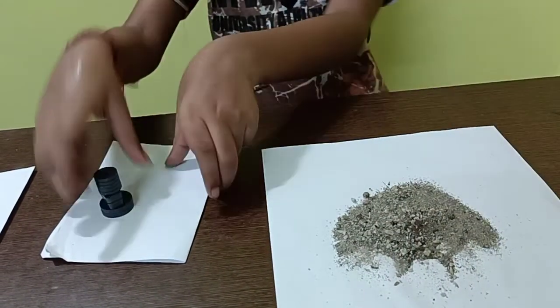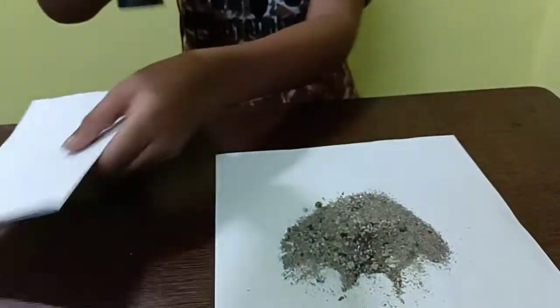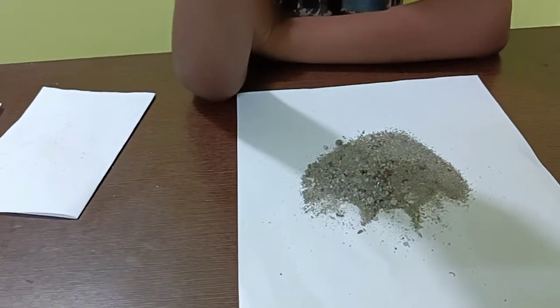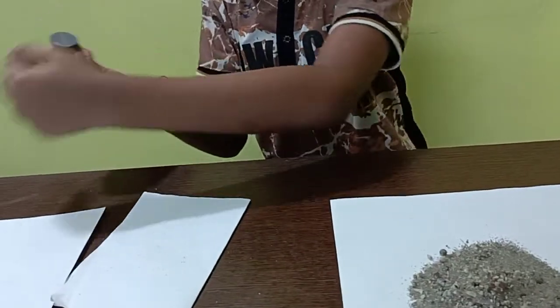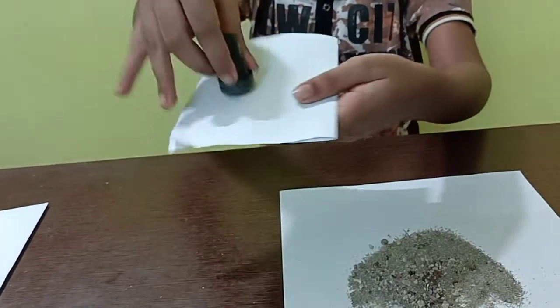And then, we are going to put the magnet on the paper because if we put the iron particles with the magnet, it will be very difficult to remove. So, we are going to use paper for ease.